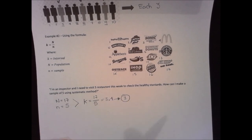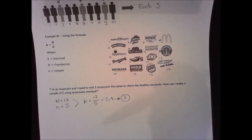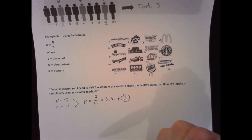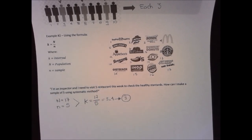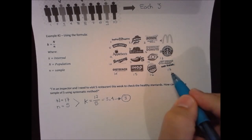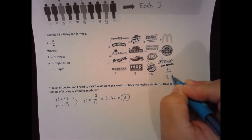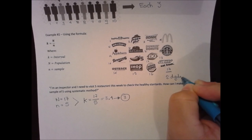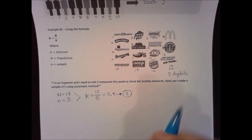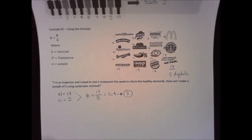We have k, but the question is which one is going to be the first? If you simply decide that number one will be the first, this is non-probabilistic again, because you are deciding. It should be absolutely random. So we need to check the last label — it has two digits — and we will use the random sampling numbers table again.